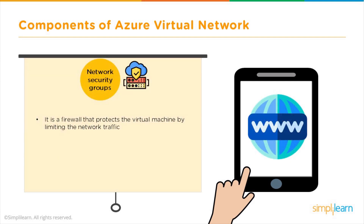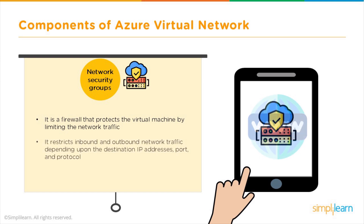Network security groups act as a kind of firewall that protects virtual machines by limiting network traffic. They restrict inbound and outbound network traffic depending on the destination IP address, port, and protocol. The network security group sits on the instances or virtual machines and defines how traffic should reach the ports on the virtual machine — which ports to open and for which IP addresses. The end user or administrator specifies this, and they act as firewall rules protecting the virtual machines.